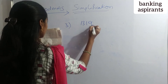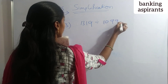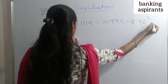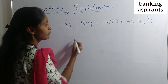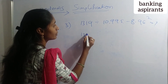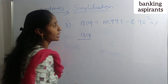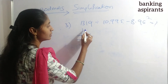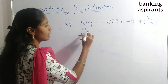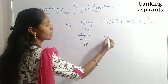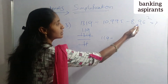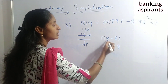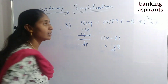Next: 1319 divided by 10.995 minus 8.96 squared equals how much? Approximating: 1319 ÷ 11 ≈ 119 (11 × 11 = 121, close). 8.96 ≈ 9, so 9² = 81. 119 minus 81 equals 38. The answer is 38.